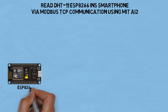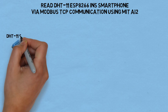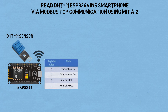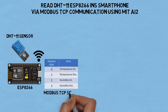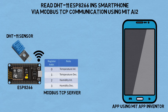In this video, I'm using an ESP8266 board to read temperature and humidity values from a DHT11 sensor. The ESP will act as a Modbus TCP server, and the sensor readings will be stored in holding registers. Here are the details of the registers used. The ESP is connected to the network using Wi-Fi. I've created an application using MIT App Inventor which will act as a Modbus client, connected to the network, and will read values from registers on the Modbus TCP server.